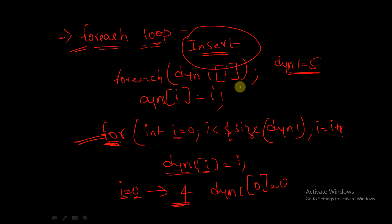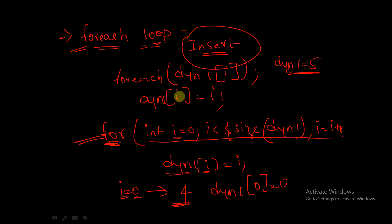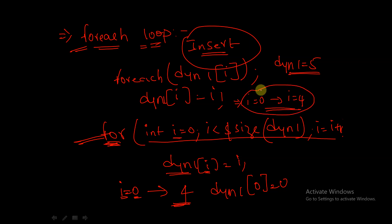Now, with the for-each loop, instead of writing all those things, it automatically detects the size of the memory. The variable i is also inbuilt — no need to declare it separately. It will iterate from zero and automatically increment up to i = 4. We don't need to write all those declarations; it will automatically increment the values of i. This is the advantage of using a for-each loop.